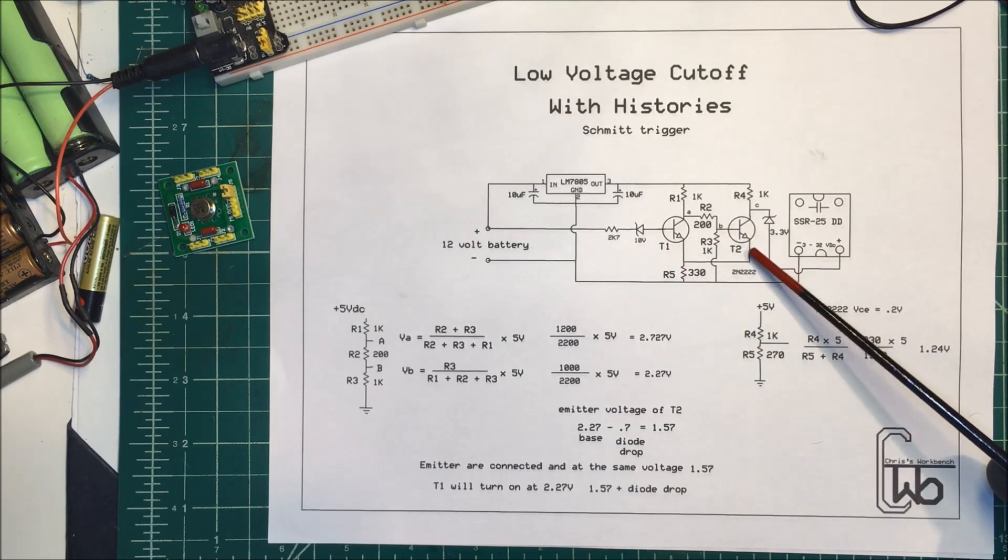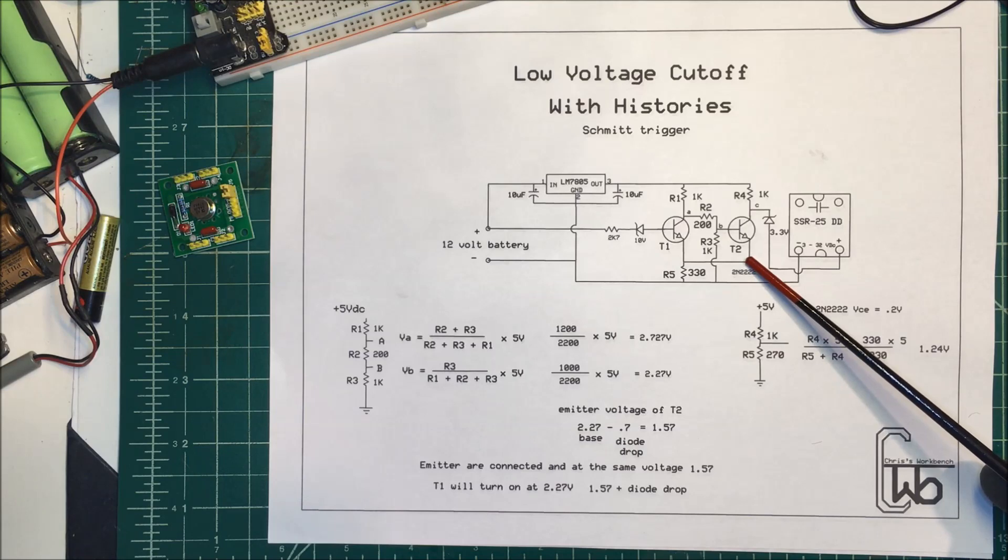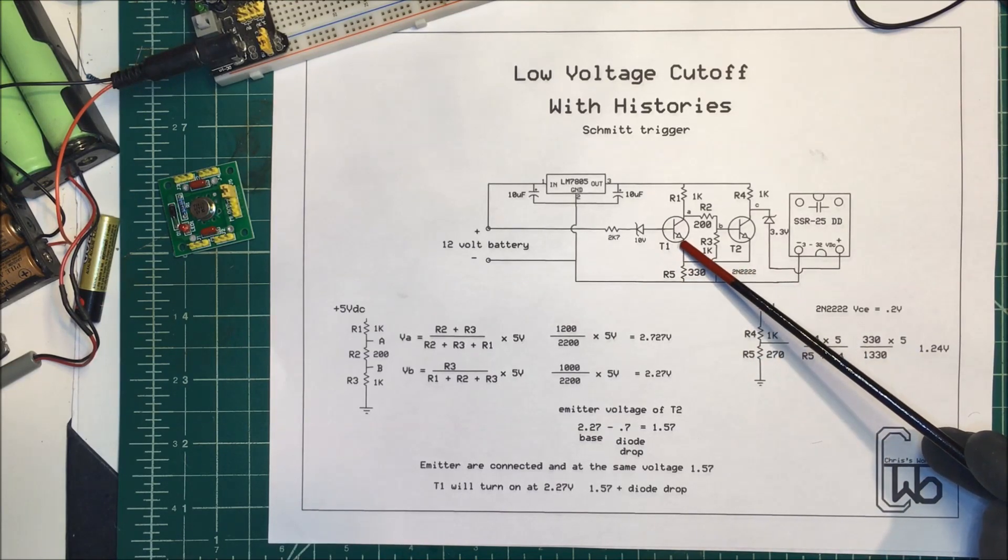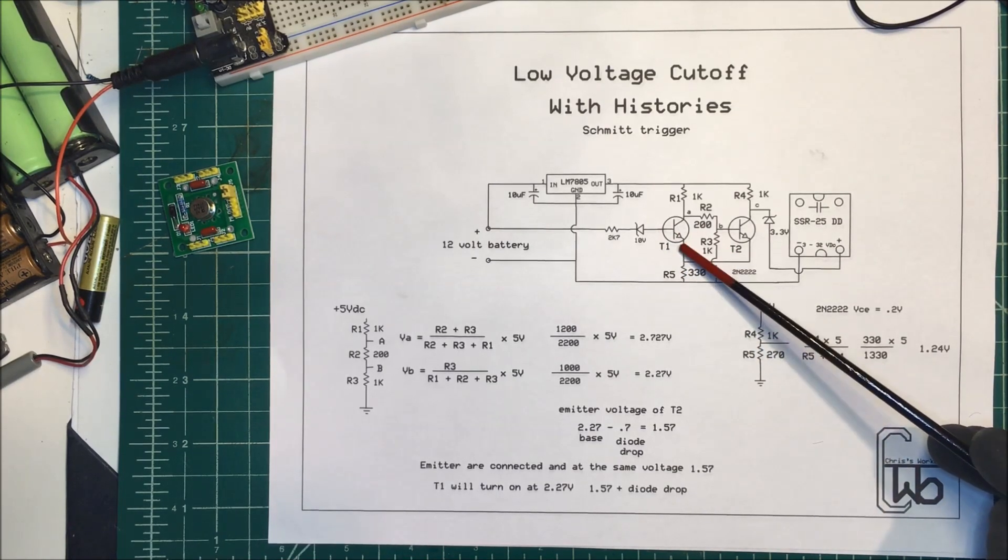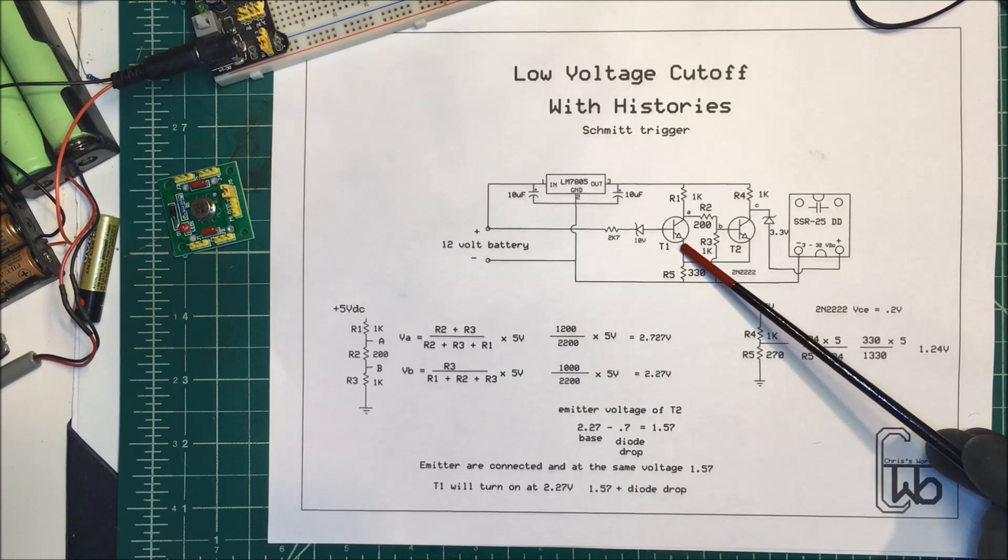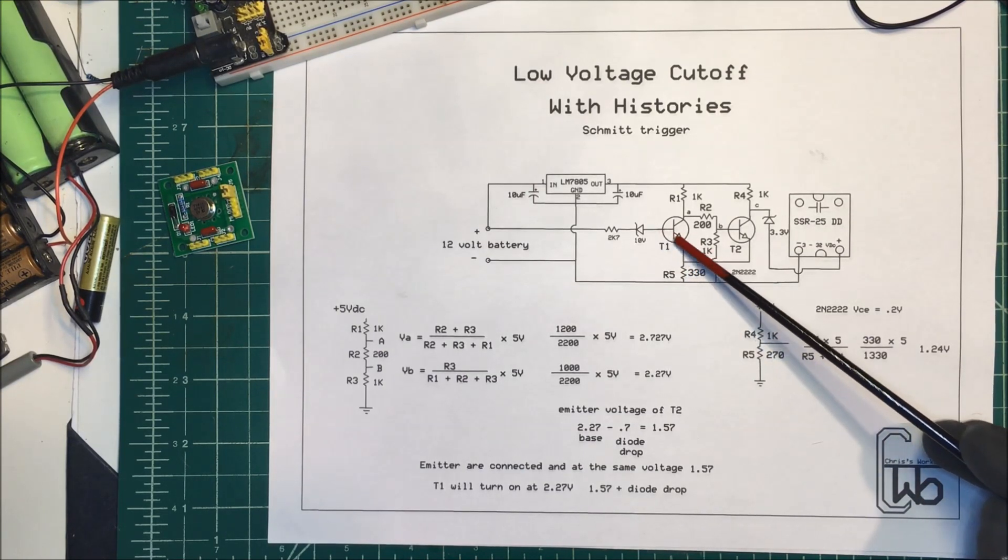Now I have on this emitter here I said I had 1.57 volts so over here it's tied to this emitter I have 1.57 volts. In order for this transistor to turn on I have to overcome this 1.57 volts plus the diode drop across here so I need 2.27 volts across this transistor to turn on.